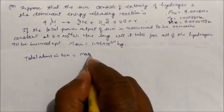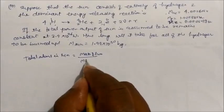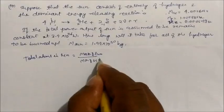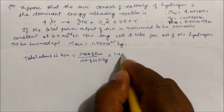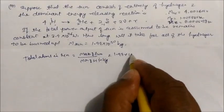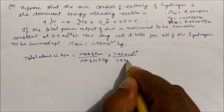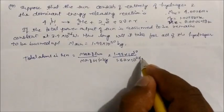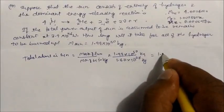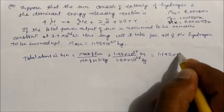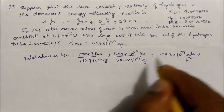Total hydrogen atoms in the sun = mass of the sun ÷ mass of one hydrogen atom. That is 1.99 × 10³⁰ kg ÷ 1.67 × 10⁻²⁷ kg = 1.192 × 10⁵⁷ hydrogen atoms present in the sun.